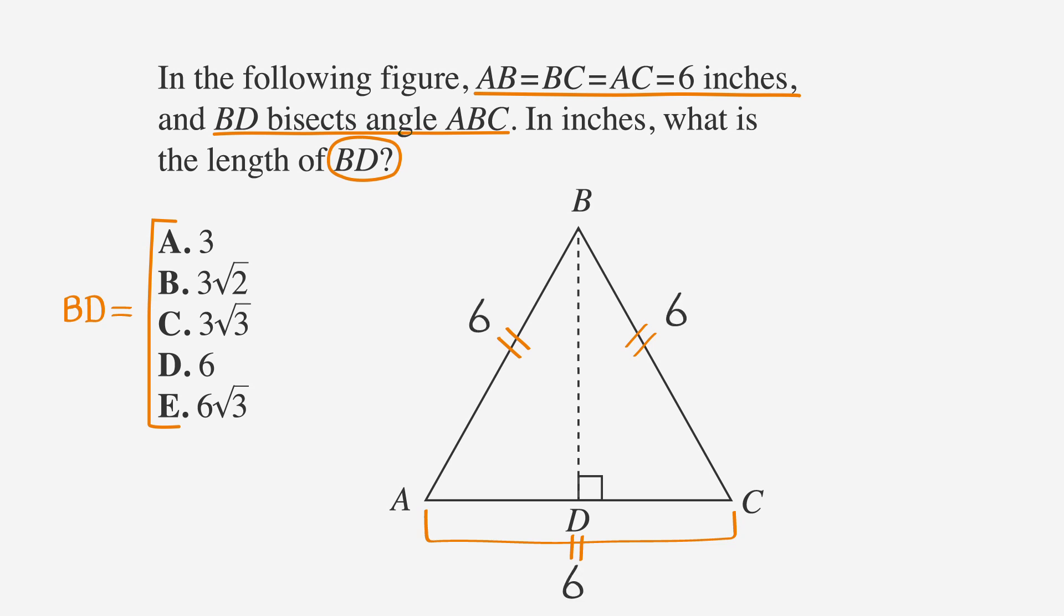Since all three sides are equal, we know ABC is an equilateral triangle, which means all three angles are 60 degrees. The question tells us that BD bisects angle ABC, which means that it cuts angle ABC in half.